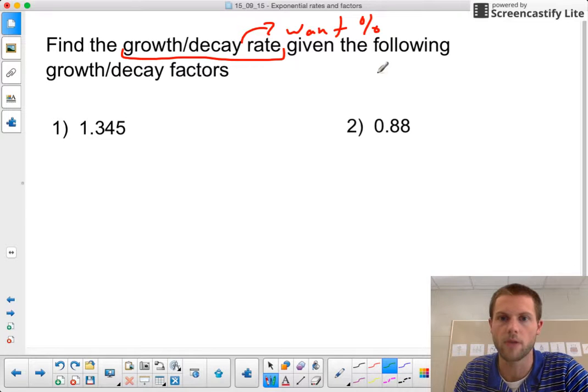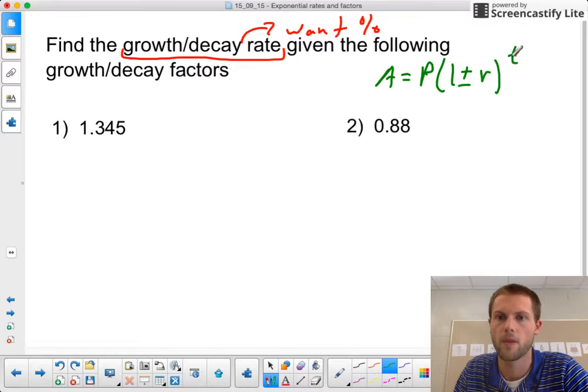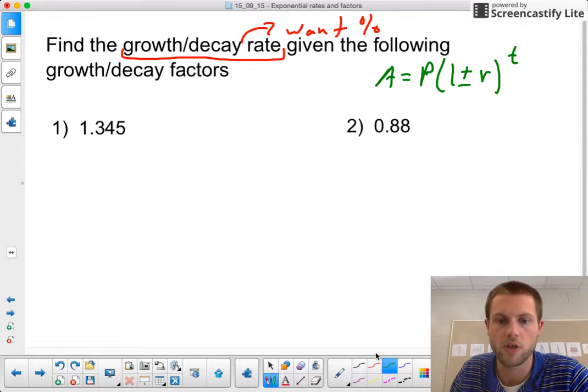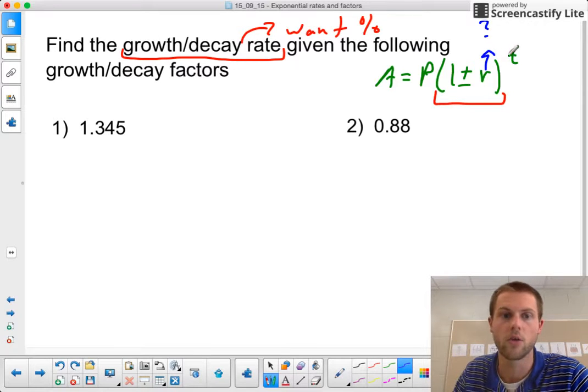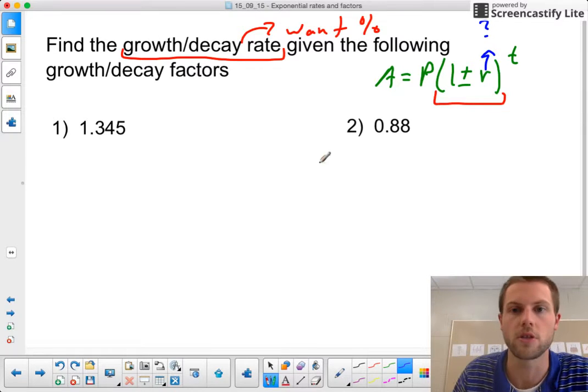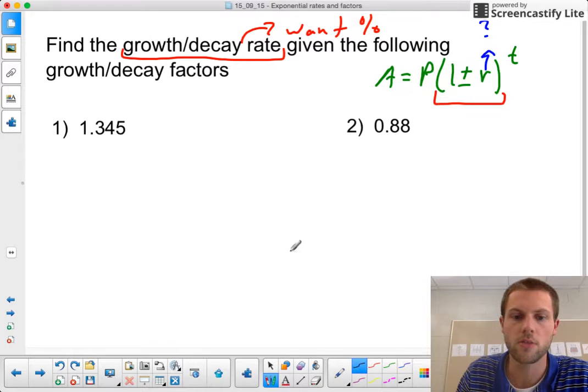As a reminder, the formula for growth and decay in exponentials looks like this. In this scenario we are starting with the entire factor, all of this, and we want to know what our growth rate or decay rate as a percentage is.